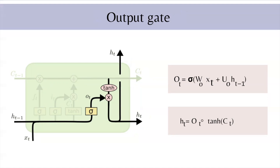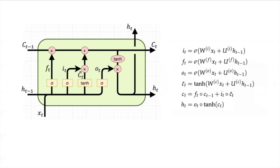ct contains a lot of information that is not necessarily required to save in the hidden state. The output gate decides what parts of ct are to be presented in the hidden state. This is done by taking the input state and the hidden state, multiplying by corresponding weights, adding them together, applying sigmoid, and multiplying with tanh of ct (the cell state). This ht will be passed to the next LSTM cell. Adding all operations together: xt (current input), ht-1 (previous hidden state), ct-1 (previous cell state) — forgetting some information, updating some information, and outputting some information.